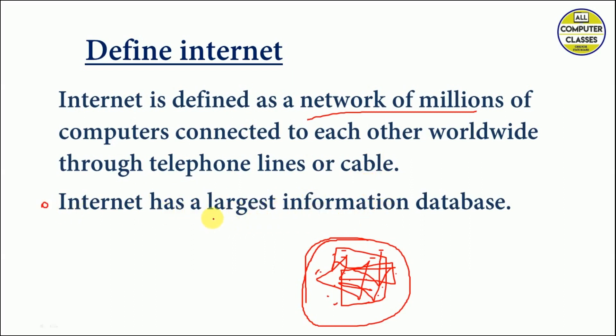In a database, we keep a huge amount of information. Why is it the largest? For any kind of information, we don't approach dictionaries or books — the first thing that comes to our mind is internet, we Google it. All types of information are kept on internet, stored in databases. So internet has the largest information database. I hope you are clear with the definition of internet.